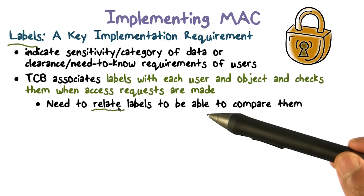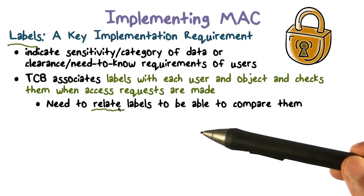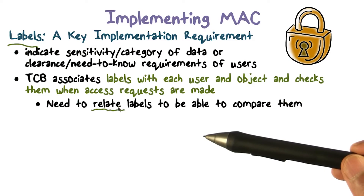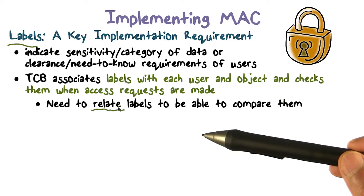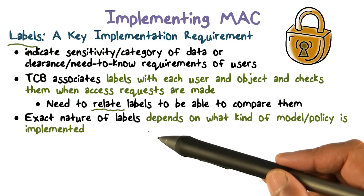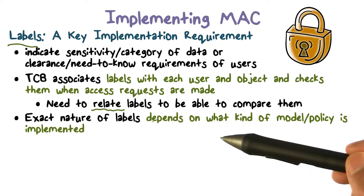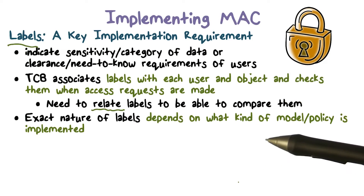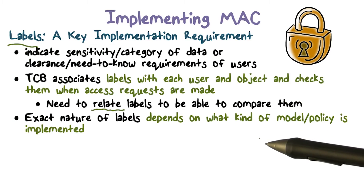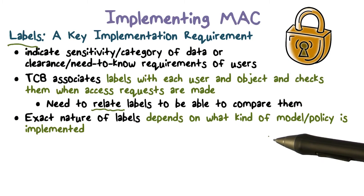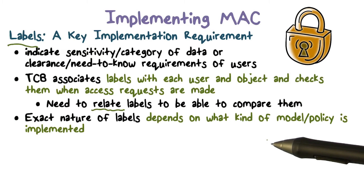We have to sort of relate or compare the labels. We're going to say: here is a user with this label, here is a document with this other label — does the user's label imply that they can access this document? So we have to compare the labels we have. The exact nature of what labels look like, how we compare them, and what the result of that comparison is — well, that's going to depend on the particular model or policy we're implementing. We can look at several different examples, each with a very different kind of label and how you make use of it.